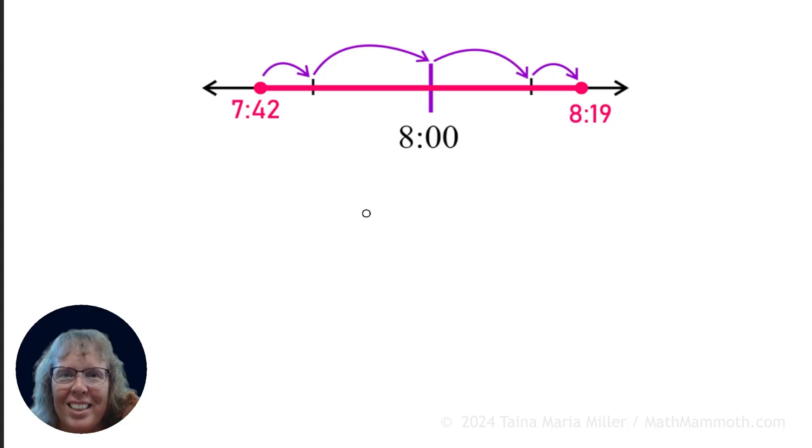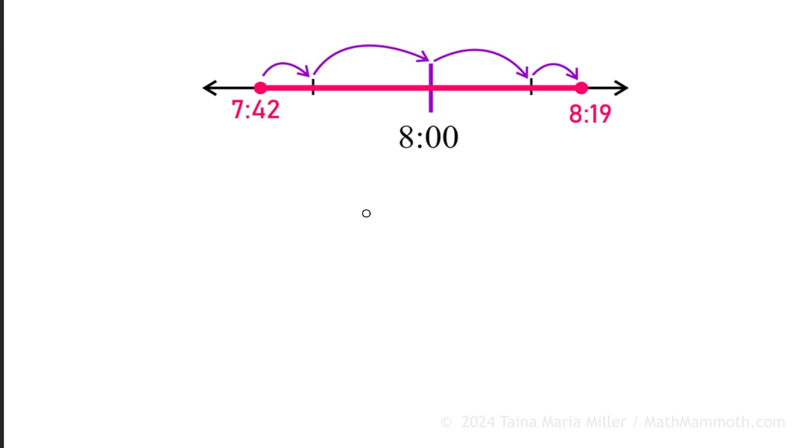Here's our next exercise. We will find the elapsed time from 7:42 till 8:19 with a number line. This number line doesn't have all the possible tick marks, but it's still really helpful. We can jump ahead on the number line from 7:42 till something, till 8 o'clock, till something, till 8:19. Let's go from 7:42 till some easy number first. Can you think of what that could be?